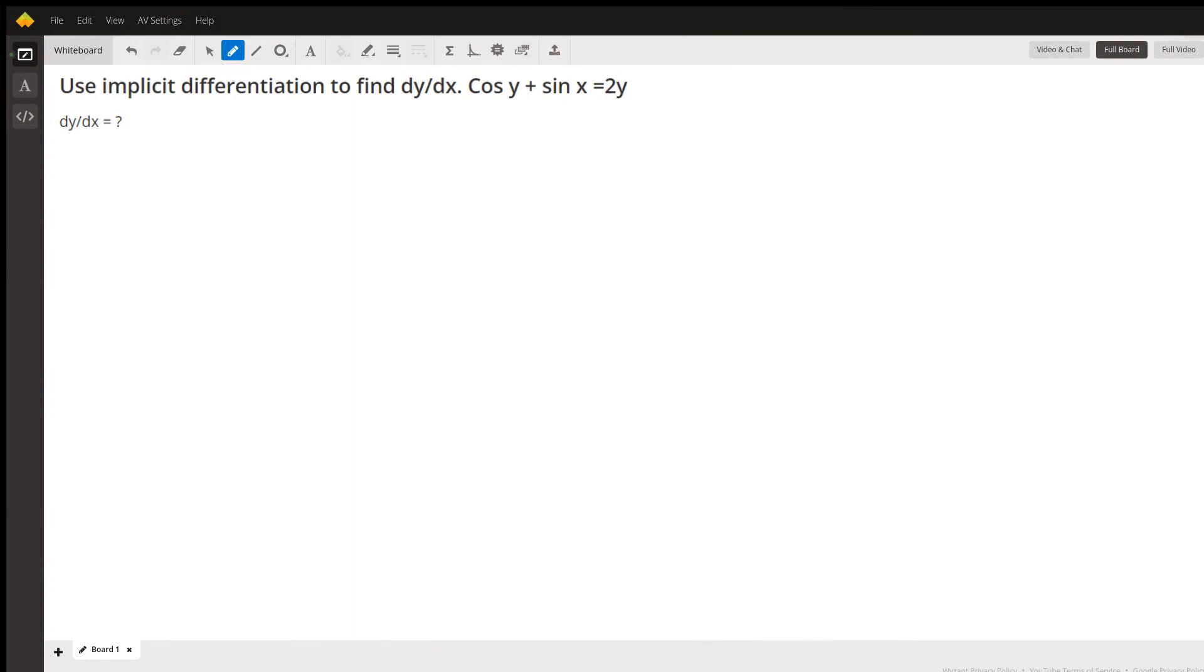We're using implicit differentiation to find the derivative. Whenever you do that, you want to find the derivative of each side. And whenever you find the derivative of something with a y, you just slap a dy dx after it.